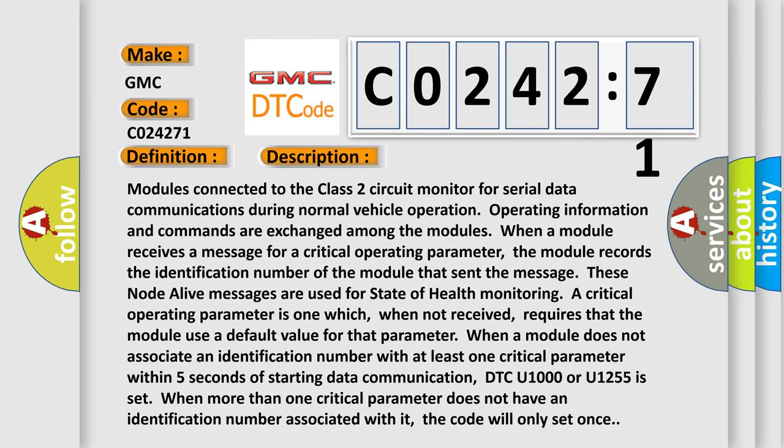Modules connected to the class 2 circuit monitor for serial data operations during normal vehicle operation. Operating information and commands are exchanged among the modules. When a module receives a message for a critical operating parameter, the module records the identification number of the module that sent the message.